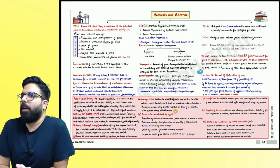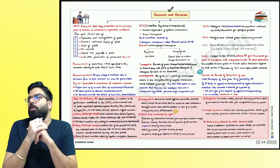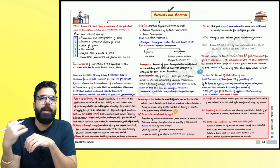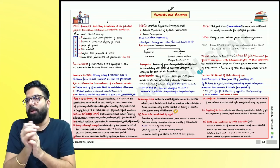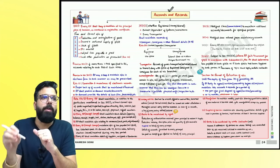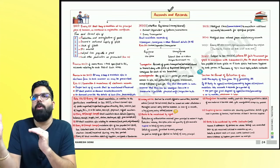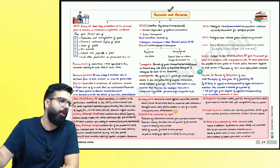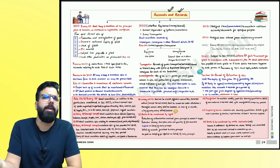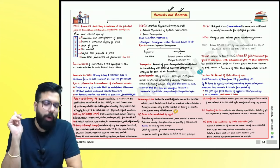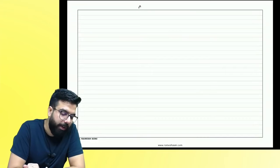Let's start our class today with Accounts and Records. This is a new chapter which the ICAI has now included in the syllabus of CA Intermediate. Earlier this chapter was not there. From May 2024 onwards, this chapter has been included for CA Intermediate. For CA Final it was already there. The chapter name is Accounts and Records — let's look at where it starts: Chapter number 9.